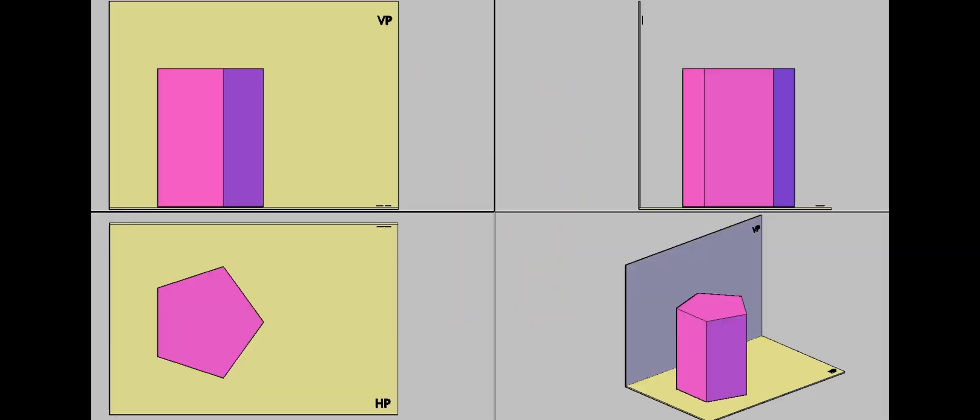The projections of this case can be drawn in two stages. In the first stage, the axis of the solid is assumed to be perpendicular to HP. So the base shape, that is the pentagon, can be seen in the plan.